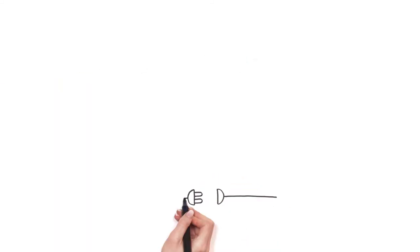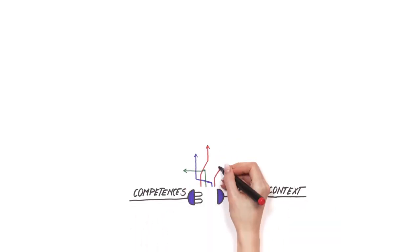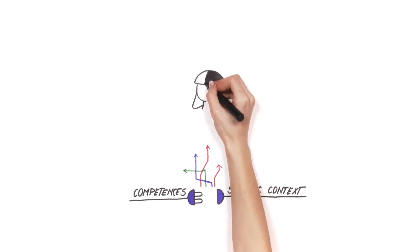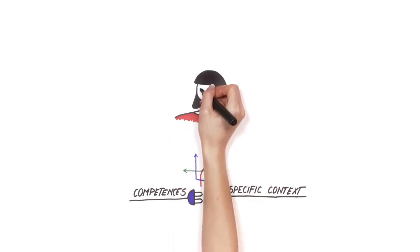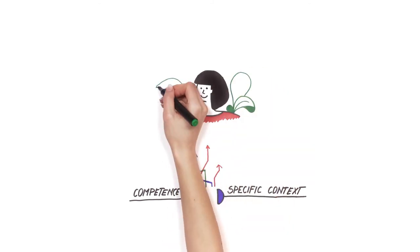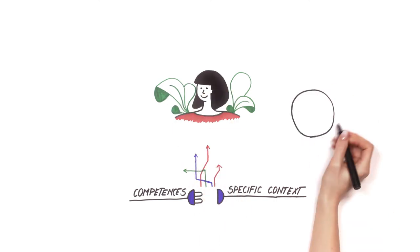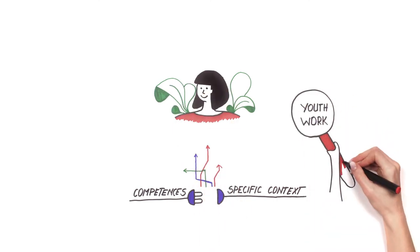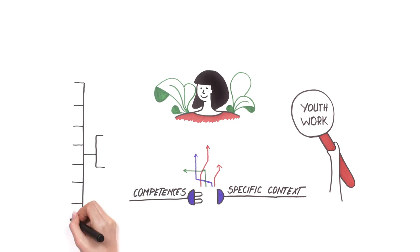Competences are always connected to a specific context and roles. This can make them challenging to explore and assess. You need to view competences in relation to your youth work context. For example, one of the European Training Strategy Competence Models focuses on competence areas necessary for international youth work.